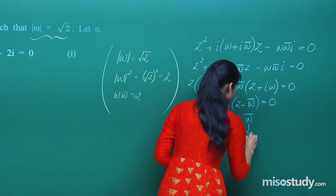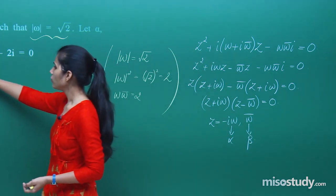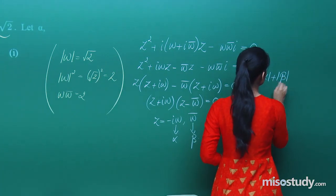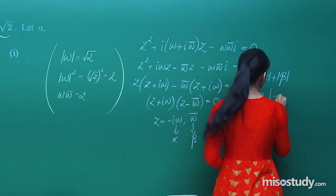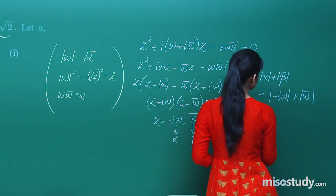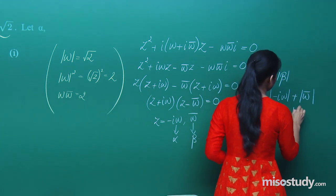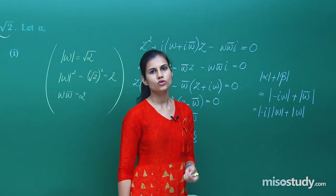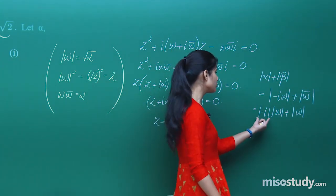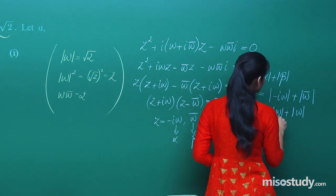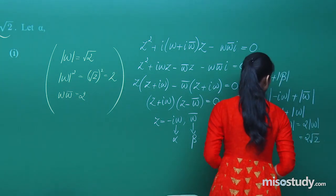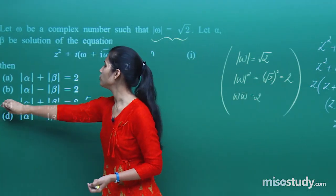If this product is 0, that means z plus iota omega equals 0, so z equals minus iota omega; and z minus omega bar equals 0, so z equals omega bar. Taking alpha as minus iota omega and beta as omega bar, consider mod alpha plus mod beta. Mod alpha is mod of minus iota omega plus mod of omega bar. This becomes mod of minus iota times mod omega plus mod omega. Since modulus of iota is 1 and modulus of a complex number equals that of its conjugate, you get 1 times mod omega plus mod omega, which is twice mod omega. Since mod omega is root 2, mod alpha plus mod beta equals 2 root 2.